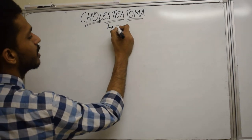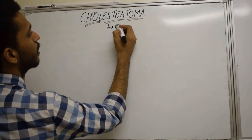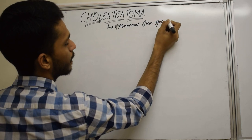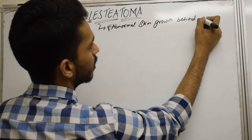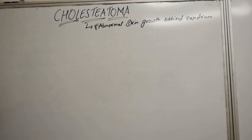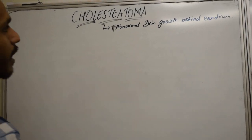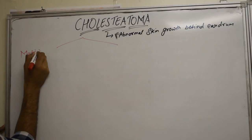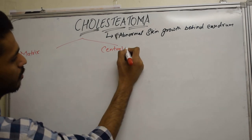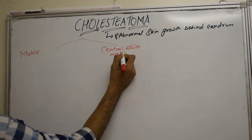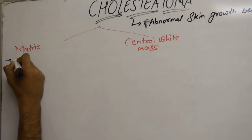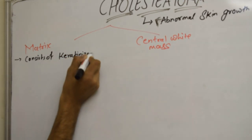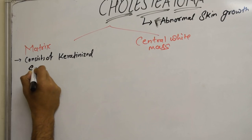Cholesteatoma is nothing but an abnormal skin growth behind the eardrum. It has two parts. The first part is a matrix, which consists of keratinized squamous epithelium.